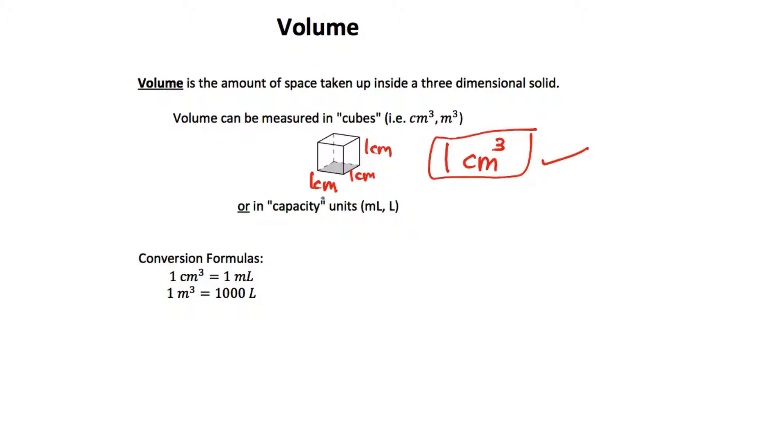Another way is capacity units or the amount of liquid inside that object, milliliters or liters. In terms of how these things are connected, one centimeter cubed, if melted down, is equivalent to one milliliter of liquid. Or another common conversion that's used is one meter cubed, one meter by one meter by one meter, a very large space, that's equivalent to a thousand liters.